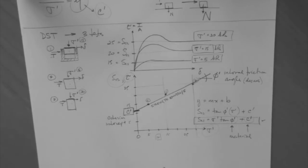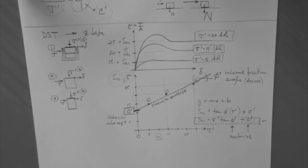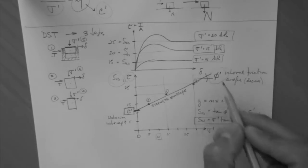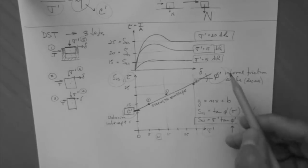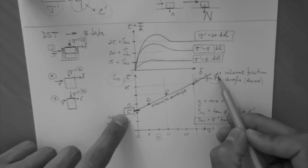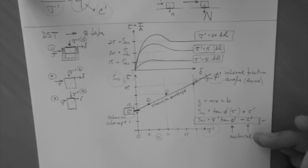All right. So what else? So this is the relationship. This is what you want when you run the test. You want phi' and c' for the soil. Now.